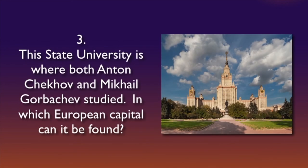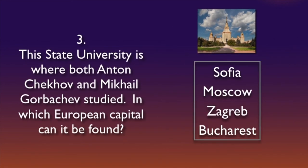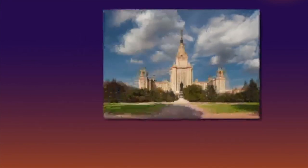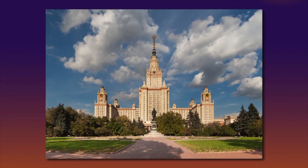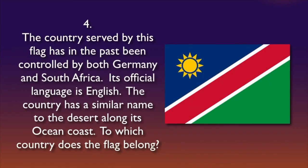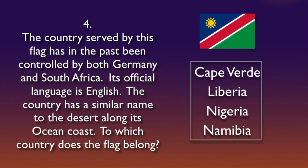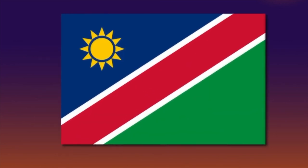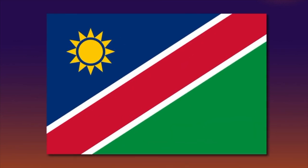Question 3: the European capital is Moscow. And Moscow State University was founded on the 23rd of January 1755. Question 4: the country to which the flag belongs is Namibia. And the desert along Namibia's coast is the Namib Desert. And Namib originally means 'vast place'.